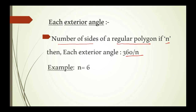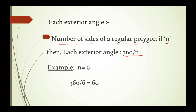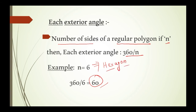Example: I have taken n equals 6. So, 360 by 6 gives each angle as 60 degrees. Since n equals 6 means hexagon, each exterior angle of a regular hexagon is 60 degrees.